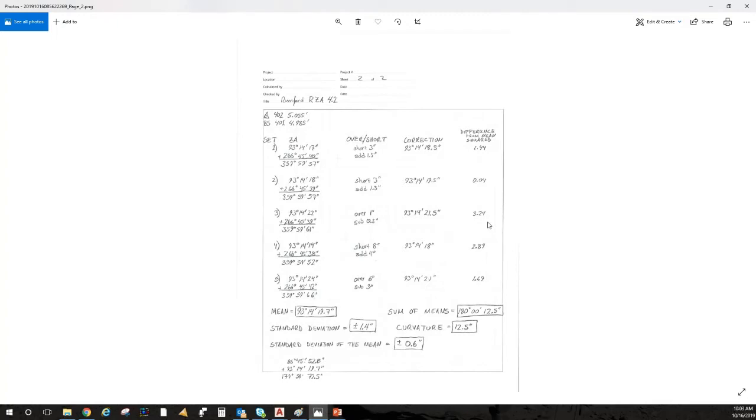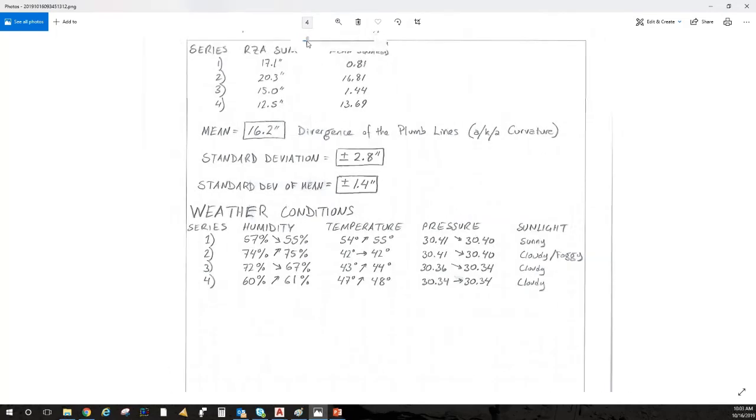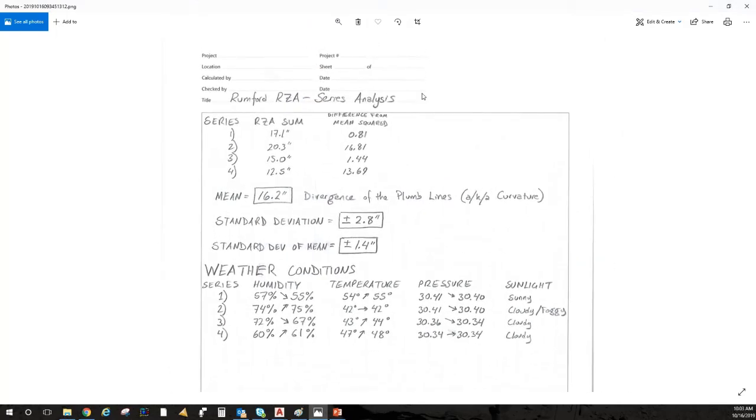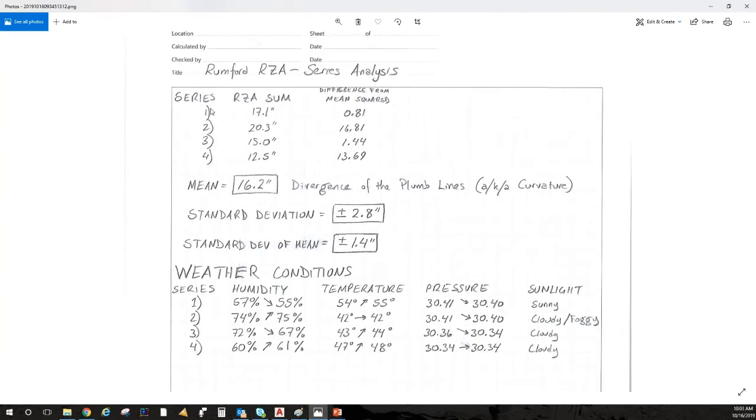Now we're going to look at the four series average, look at and analyze that. So Rumford RZA series analysis - I think you folks are going to like this. Series one, two, three, and four.